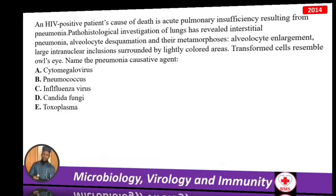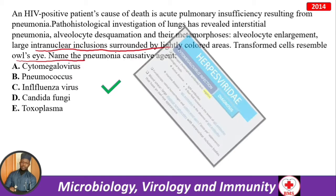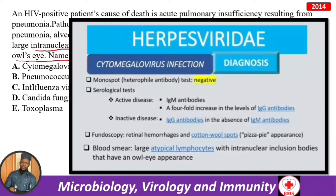In an HIV-positive patient, the cause of death is acute pulmonary insufficiency resulting from pneumonia. Pathohistological investigation of the lungs reveals interstitial pneumonia, alveolocyte desquamation and metamorphosis — alveolocyte enlargement with large intranuclear inclusions surrounded by lightly colored areas. The causative agent is cytomegalovirus (CMV).